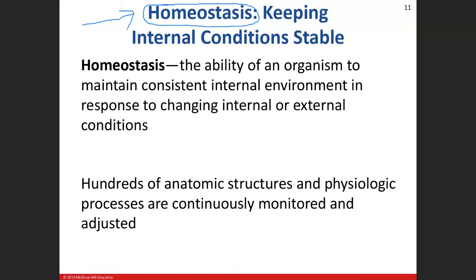Homeostasis is the ability of the organism — you, me, a dog, a cat — to maintain a consistent internal environment in response to internal or external conditions. What that means is your body's ability to maintain a consistent internal environment when things outside or inside your body are changing. Like temperature — your body's normal temperature is 98.6.